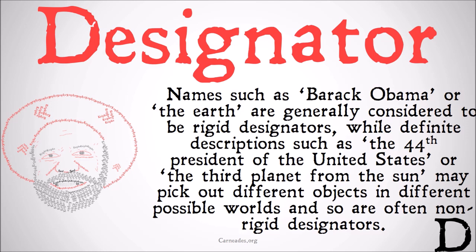Names such as Barack Obama or the Earth are generally considered to be rigid designators, while definite descriptions such as 'the 44th president of the United States' or 'the third planet from the sun' may pick out different objects in different possible worlds, and so are often non-rigid designators.